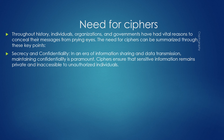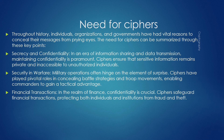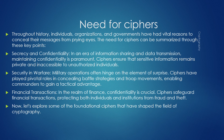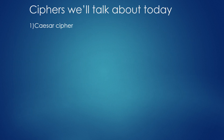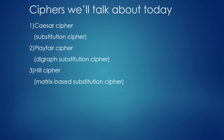The need for ciphers can be summarized through key points such as secrecy, confidentiality, and security in warfare and financial transactions. The ciphers covered today are: the Caesar cipher (a substitution cipher), the Playfair cipher (a digraph substitution cipher), and the Hill cipher (a matrix-based substitution cipher).